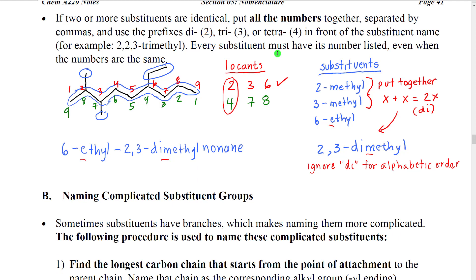When two or more substituents are identical, we group them together and use the prefixes di, tri, or tetra in front of the names. However, every substituent has to have its number listed even when the numbers are the same. So for example, 2,2,3-trimethyl: we have three methyls and we need three numbers even though two of the numbers are the same at two.